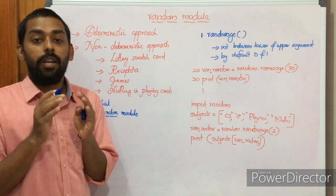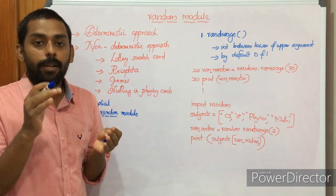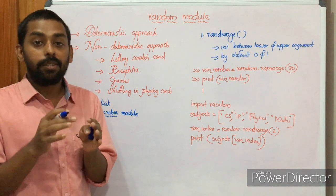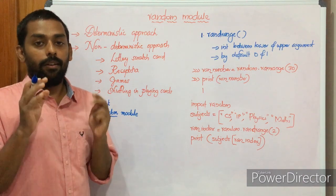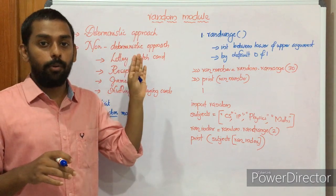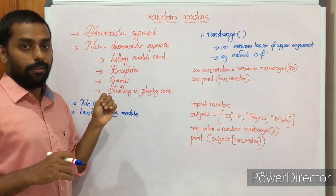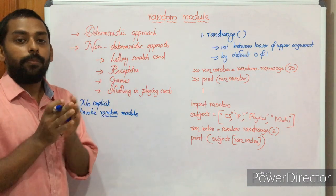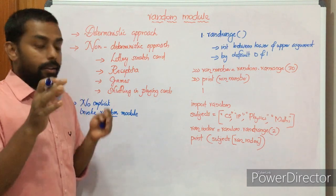The programming concepts we have learned so far involved situations where we are aware of what the output should be at the time of executing the program — that approach is called the deterministic approach. We also have a non-deterministic approach, where in some applications we don't know what the result will be. For example, gaming and simulations may need random numbers, and that's when we use random modules. Examples include lottery, scratch cards, reCAPTCHA, games, and shuffling playing cards.